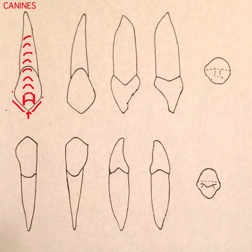Those cusp ridges make up about one-third of the incisocervical length of the entire crown, which is pretty impressive. It makes the tooth look pretty wide mesiodistally, even though it is slightly longer faciolingually.